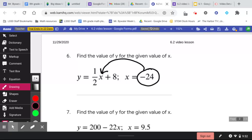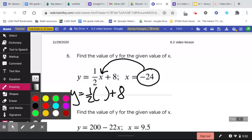simplify and solve for y. So this equation, after the substitution, looks like y equals one-half blank spot plus 8. In that blank spot is going to go my x value, negative 24.